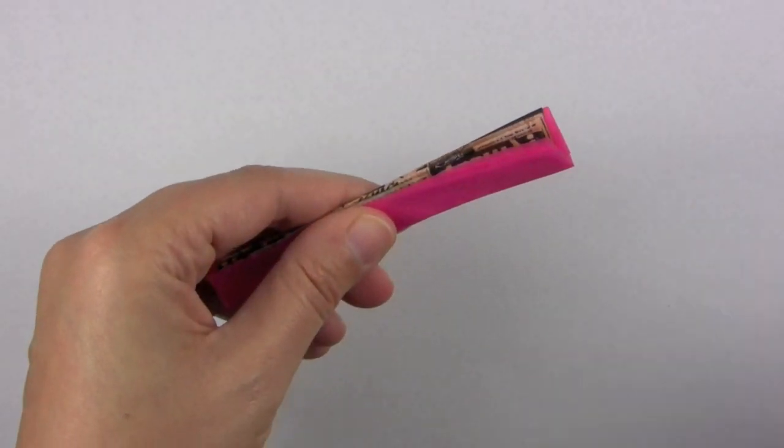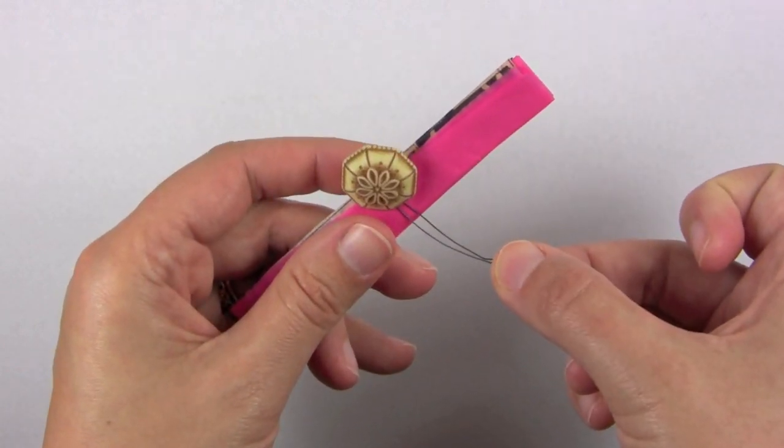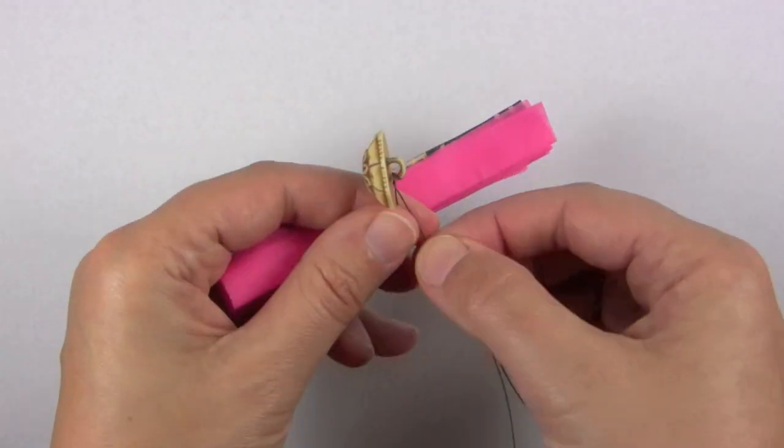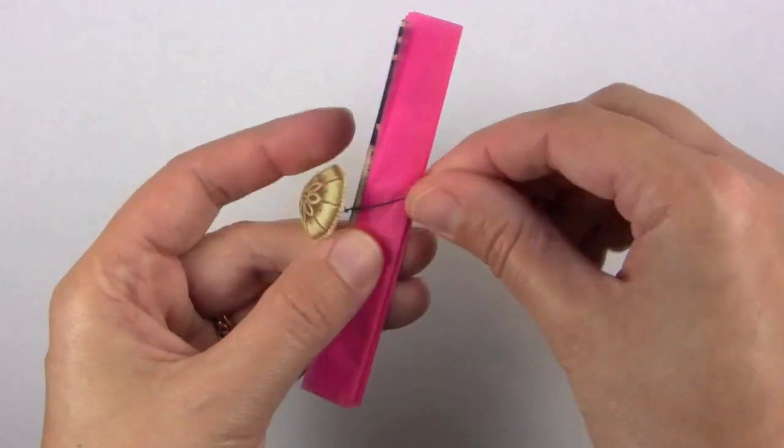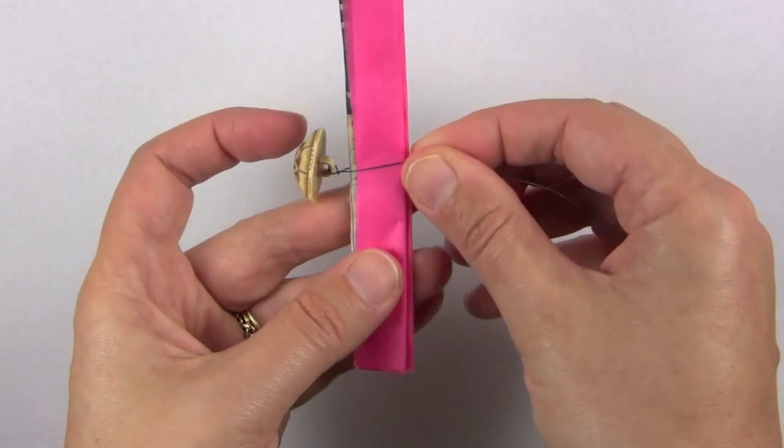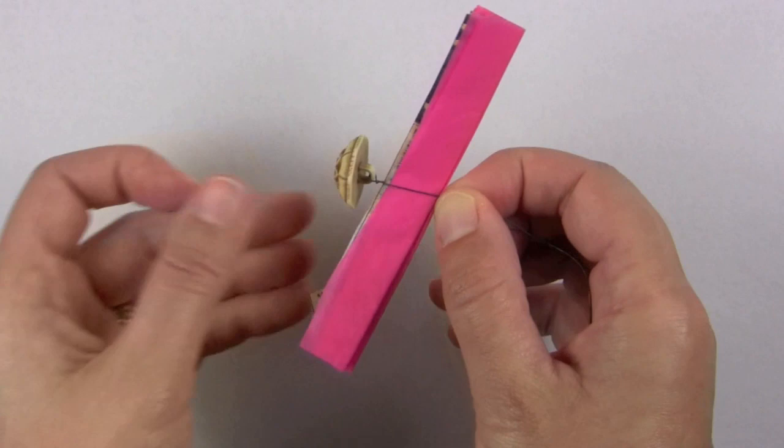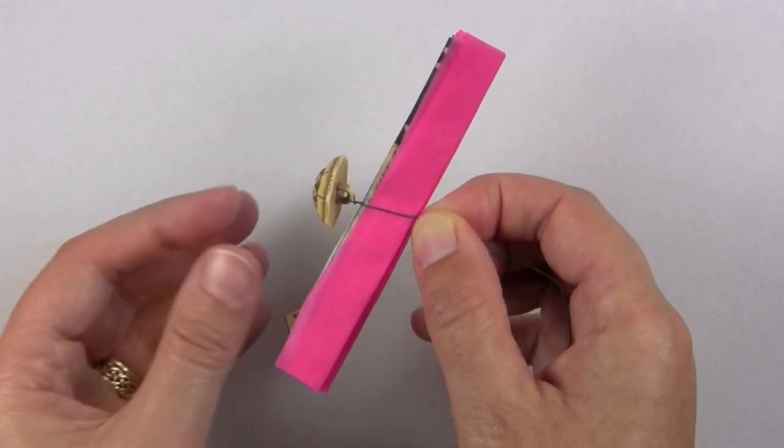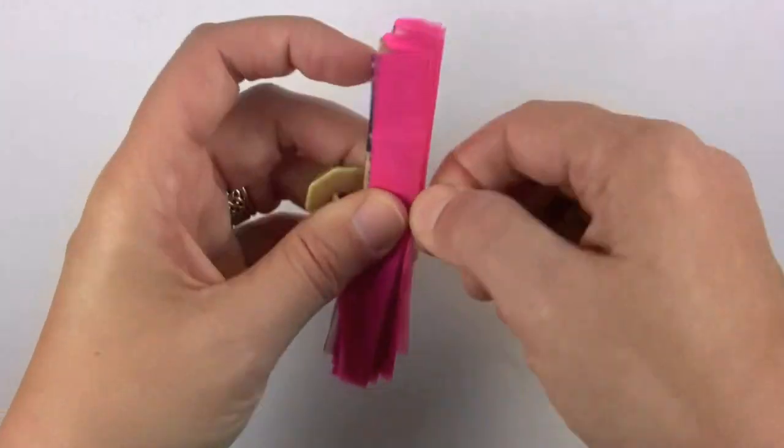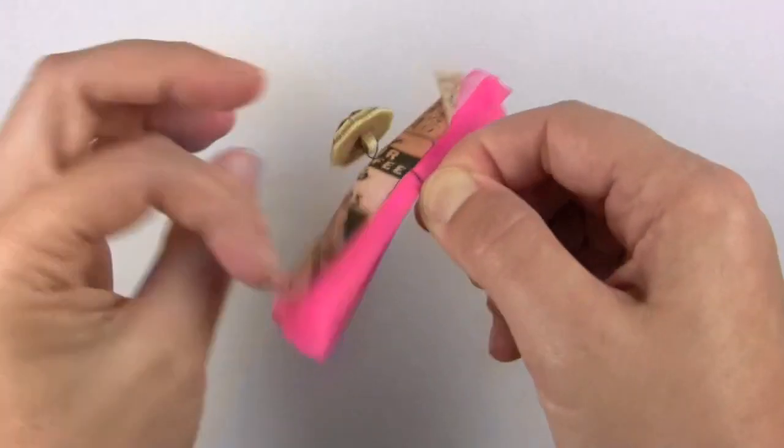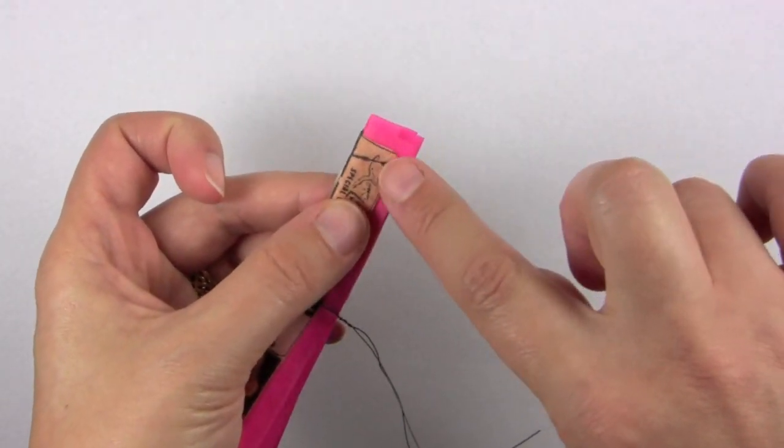Then we're going to take the button wire that we already did before and we're going to go ahead and wrap it around here with the button hanging off. And we want this to be kind of centered in here. So let me hold this here so that you can see just about like that. And don't worry about this too much because it'll be pushed down in the flower. And then we're going to give this a good twist like so. And then what we're going to do is you have two options here. You can either make this into a point like a pointy shape here or you can round the edges.